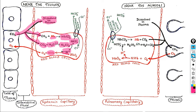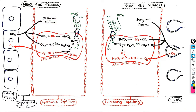If bicarbonate accumulates inside the RBC, the rate of this reaction — the combination of CO2 with H2O to produce carbonic acid — will start to slow down. To keep this reaction going, bicarbonate ion must be transported out of the RBC. If it is not taken out, the reaction will ultimately stop.